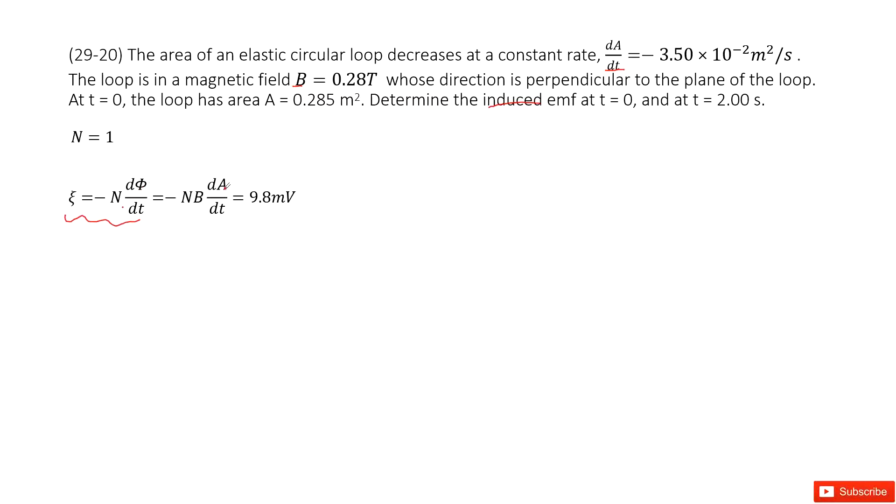Magnetic flux is B times A. B is a constant, so we can write it as the derivative of A with time t. Then we input N, B, and dA/dt. We get the answer there. It's a constant.